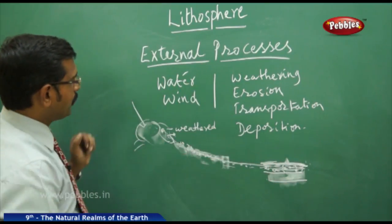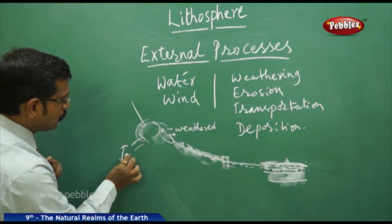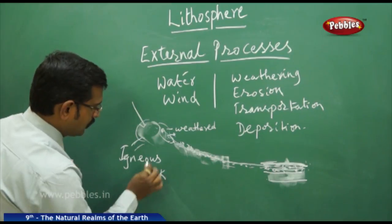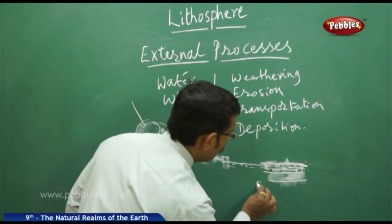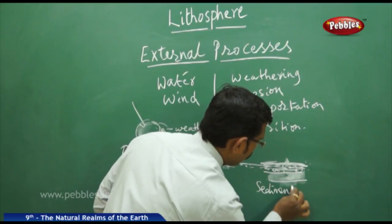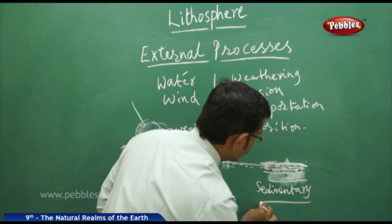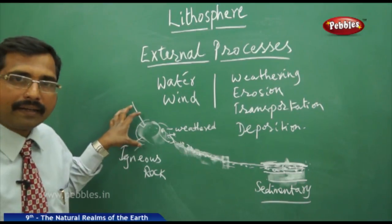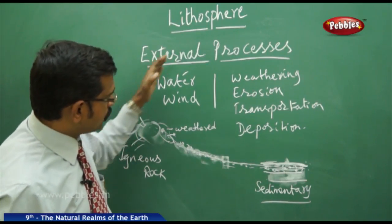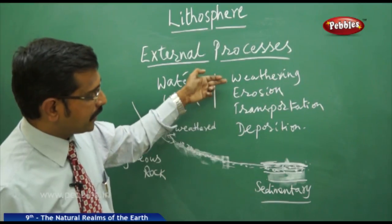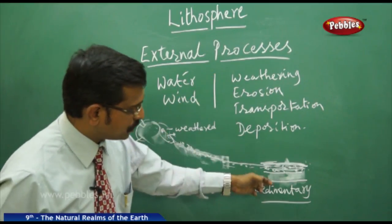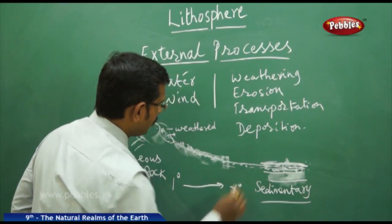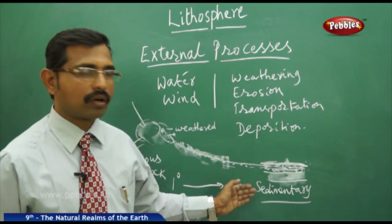These forces transform igneous rock into sedimentary rock, also called secondary rock. The first rock formed in a volcanic area, through the four processes of weathering, erosion, transportation, and deposition, becomes a secondary rock material.